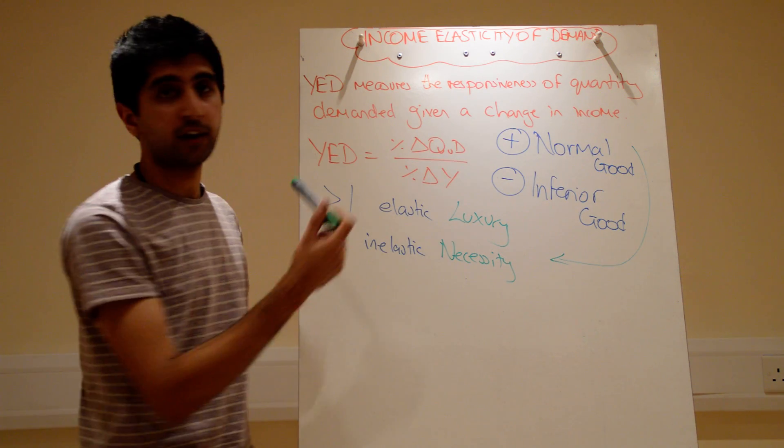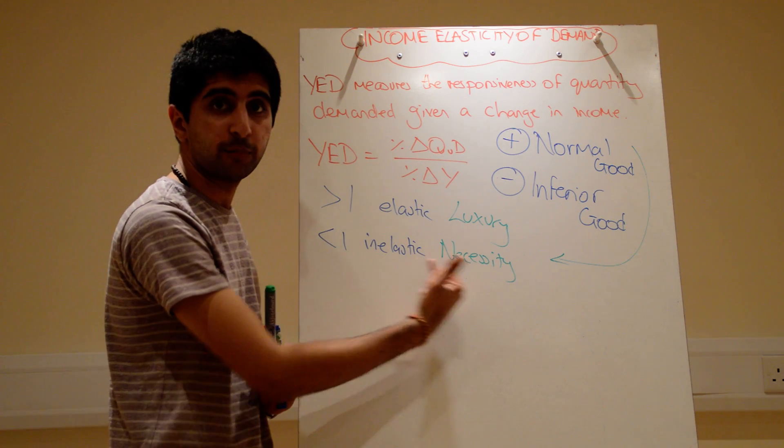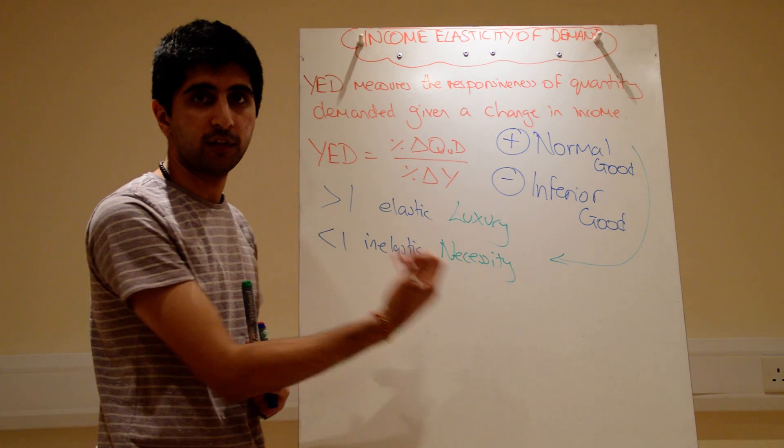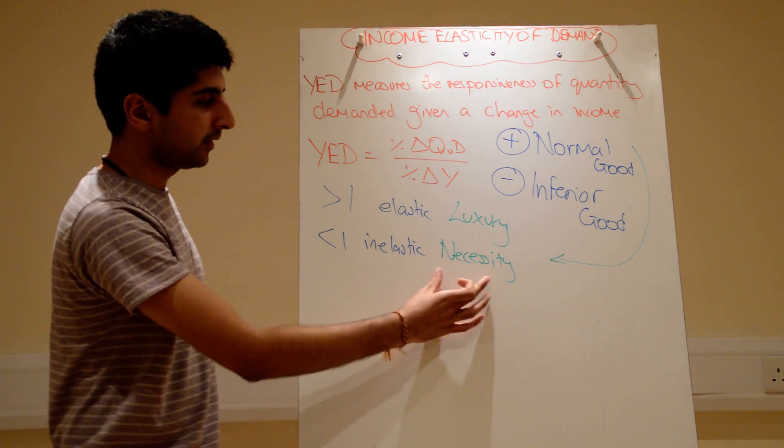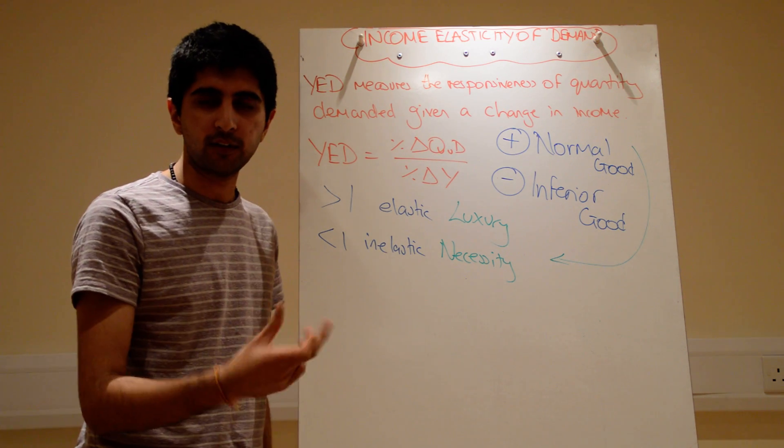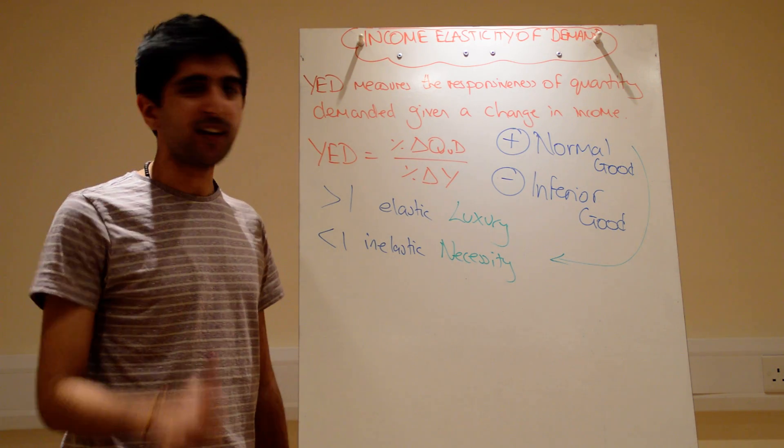So, that's how we can classify normal and inferior goods. Greater than one simply means the curve will shift by a long way. The curve shifts to the right if income has gone up. For a normal good, the curve shifts to the right by a long way. If it's a necessity, the curve doesn't shift to the right by very much. It still does that. So, that's YED for you. There really is nothing else to say on YED. Very simple.